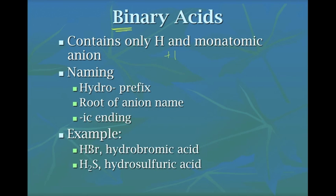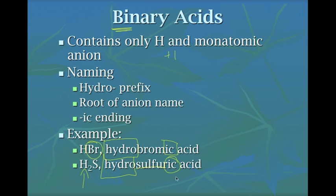For example, hydrogen plus bromine: we take 'hydro' as the prefix, add 'brom' for bromine, add '-ic' at the end, then 'acid' — giving us hydrobromic acid. Hydrogen bonded to sulfur is also a binary acid, so we get 'hydro,' 'sulfur,' '-ic,' 'acid' — hydrosulfuric acid.